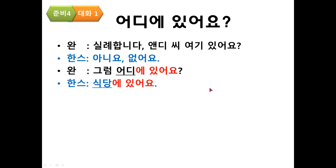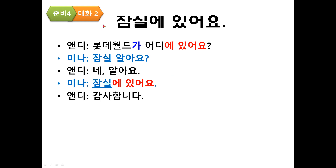네, 이제 다시 한번 대화문을 들어보도록 하겠습니다. Listen again. 대화 1 — 어디에 있어요? 식당에 있어요. 실례합니다. Andy 씨 여기 있어요? 아니요, 없어요. 그럼 어디에 있어요? 식당에 있어요. 대화 2 — 잠실에 있어요. 롯데월드가 어디에 있어요? 잠실 알아요? 네, 알아요. 잠실에 있어요. 감사합니다.